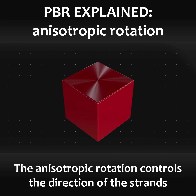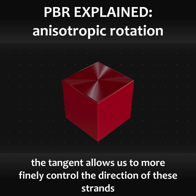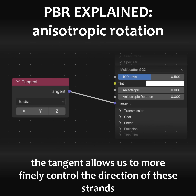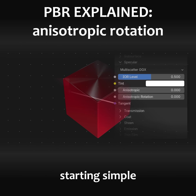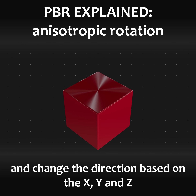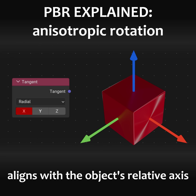The anisotropic rotation controls the direction of the strands. The tangent allows us to more finely control the direction of these strands. Starting simple, we can connect the tangent node and change the direction based on the x, y, and z. Notice how the strand direction aligns to the object's relative axis.